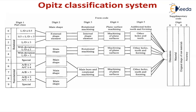The supplementary codes cover digits 6 through 9: digit 6 is the three-dimensional size, digit 7 is the material, digit 8 is the original shape of the raw material, and digit 9 is the material accuracy. Digits 1 through 5 play the major role, while digits 6 through 9 serve as supplementary codes.